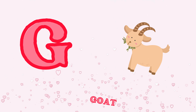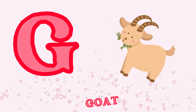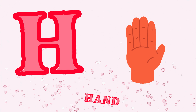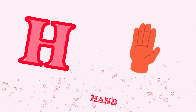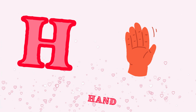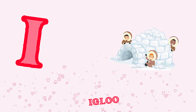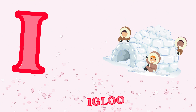G is for goat, c-c-goat. H is for hand, a-a-hand. I is for igloo, e-e-igloo.